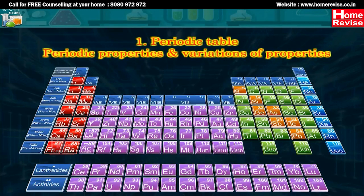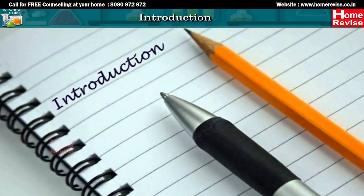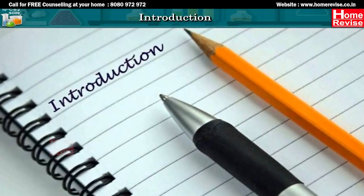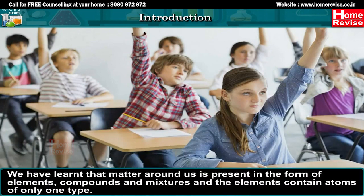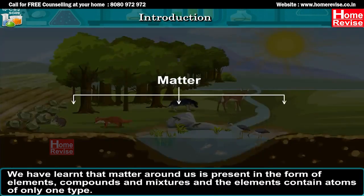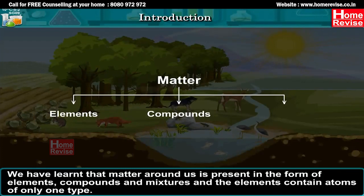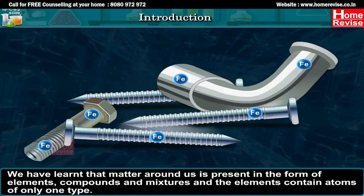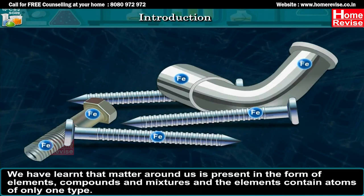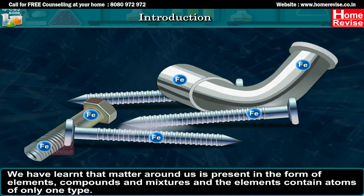Chapter 1: Periodic Table, Periodic Properties and Variations of Properties. Dear friends, in class 9th, we have learnt that matter around us is present in the form of elements, compounds and mixtures, and that elements contain atoms of only one type.